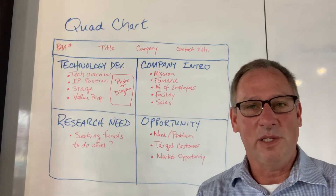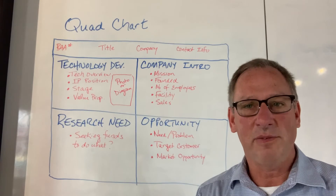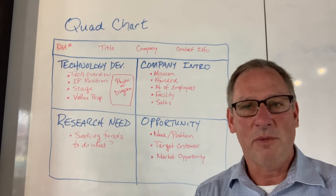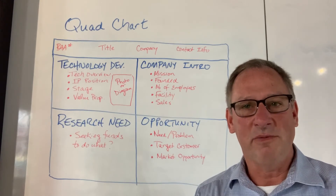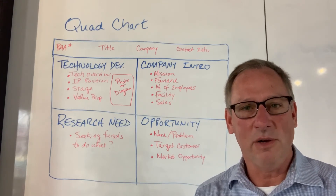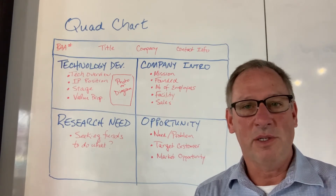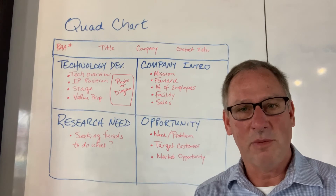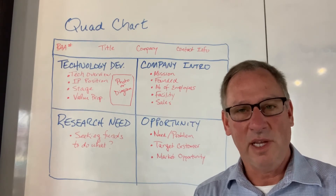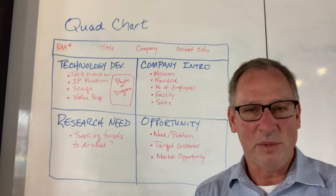In the quadrant on the top left, you talk about technology development. Give a non-jargony overview of the technology. If there's intellectual property to discuss, talk about the status of that. What stage is the project at, and what is the value proposition?